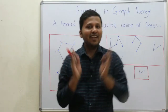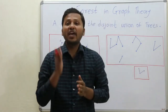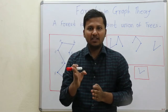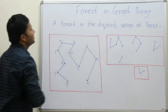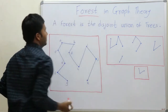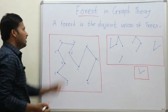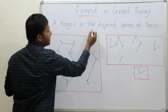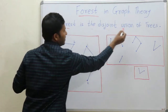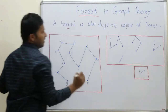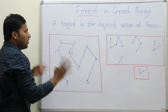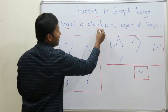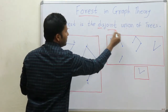Hey guys, in the last video we saw what a tree is in graph theory, and today we are going to see what a forest is. A forest is the disjoint union of trees — a union of trees where that union should be disjoint.